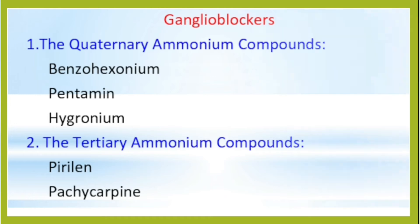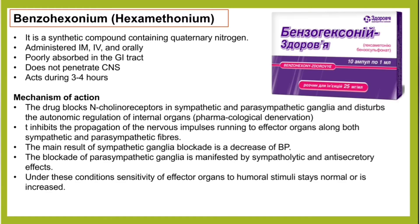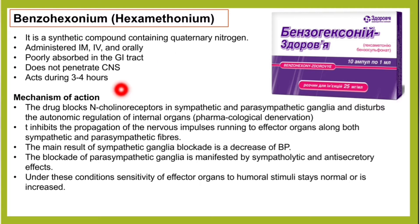Let's start with benzoyl hexonium, also known as hexamethonium. This drug is a synthetic compound containing quaternary nitrogen. It is administered intramuscularly, via IV, and orally. This drug is poorly absorbed in the GIT and does not penetrate the central nervous system. It acts for three to four hours.